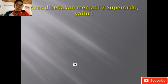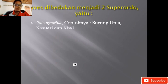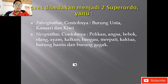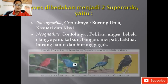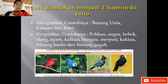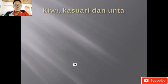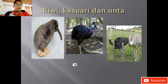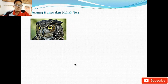Ada dua super ordo Aves. Pertama, Paleognathae, contohnya burung unta, kasuari, dan kiwi — burung-burung yang tidak bisa terbang. Kedua, Neognathae, contohnya burung pelikan, angsa, bebek, elang, ayam, kalkun, bangau, merpati, kakak tua, burung hantu, dan burung gagak. Burung hantu kepalanya bisa berputar sampai 180 derajat. Ini contoh dari Neognathae. Ini kiwi, ini kasuari, ini burung unta, ini burung pelikan, ini gagak.